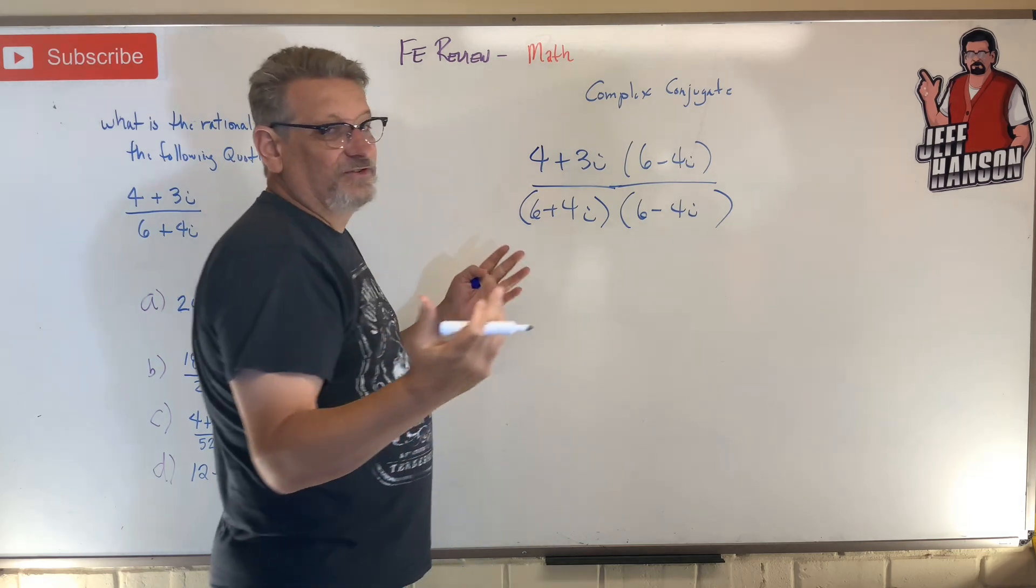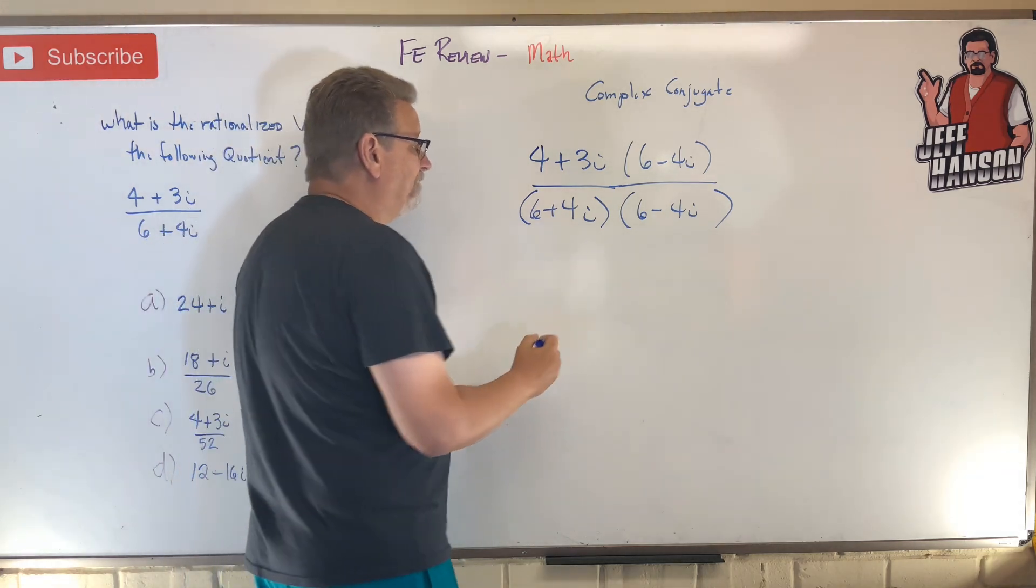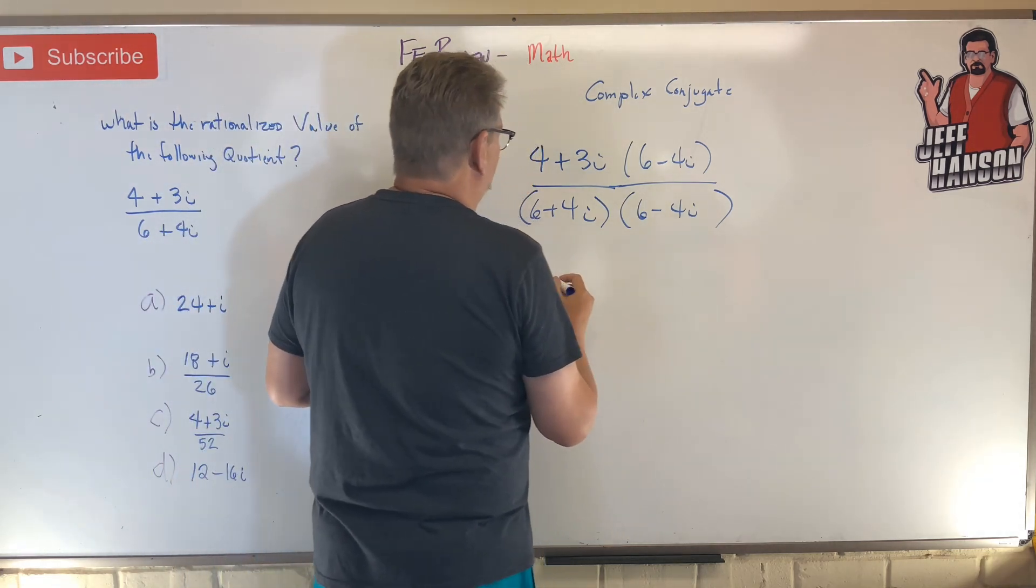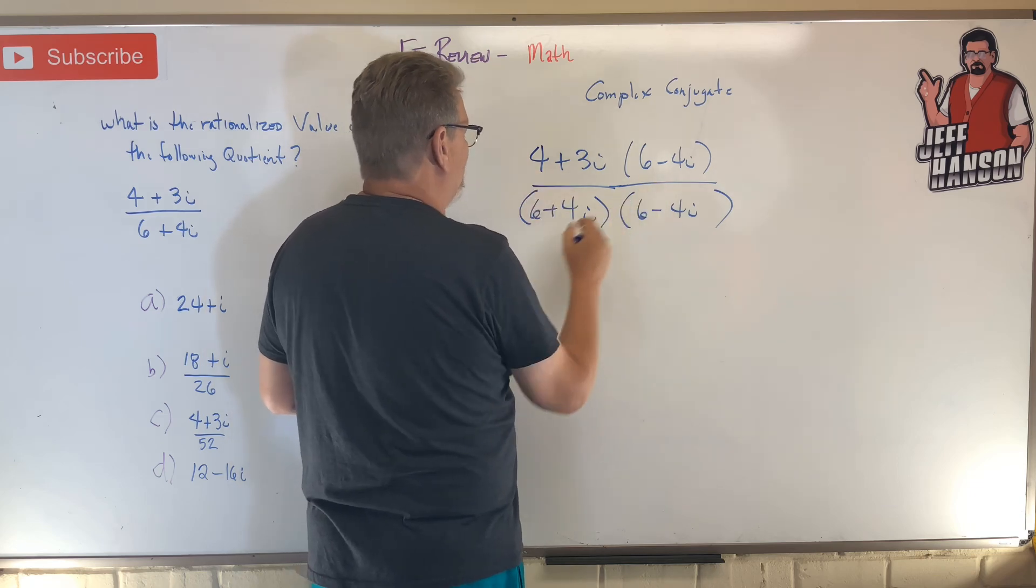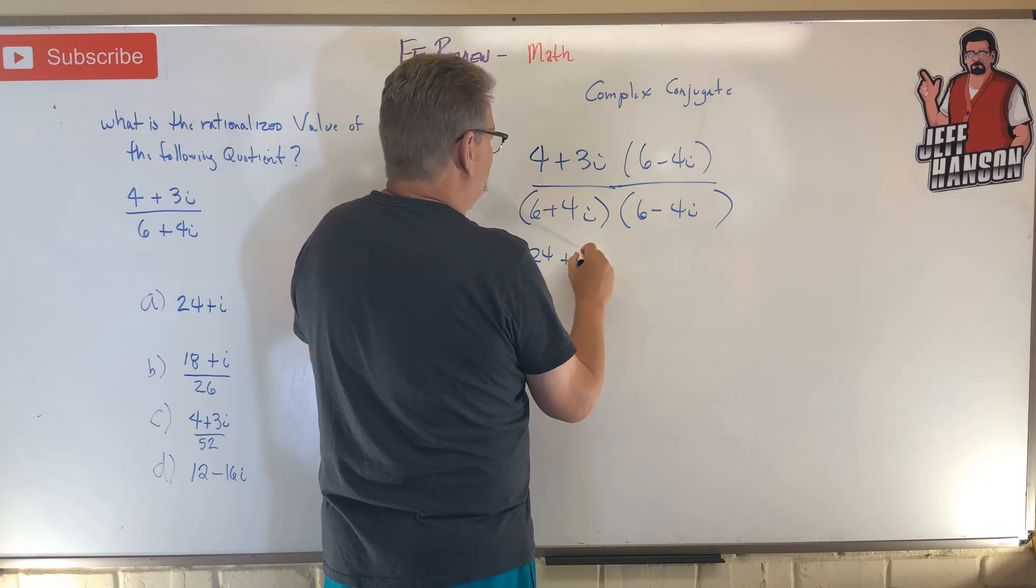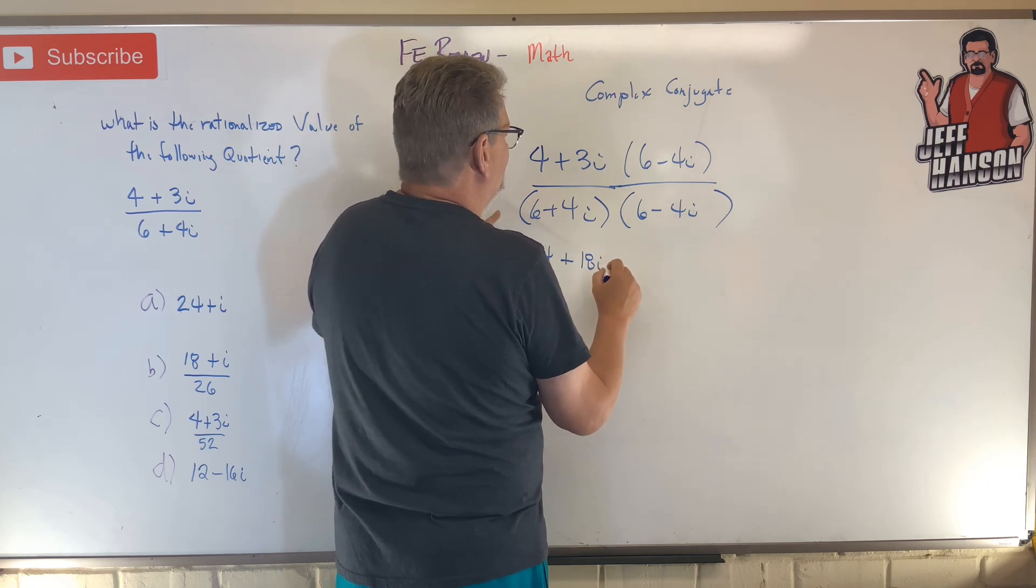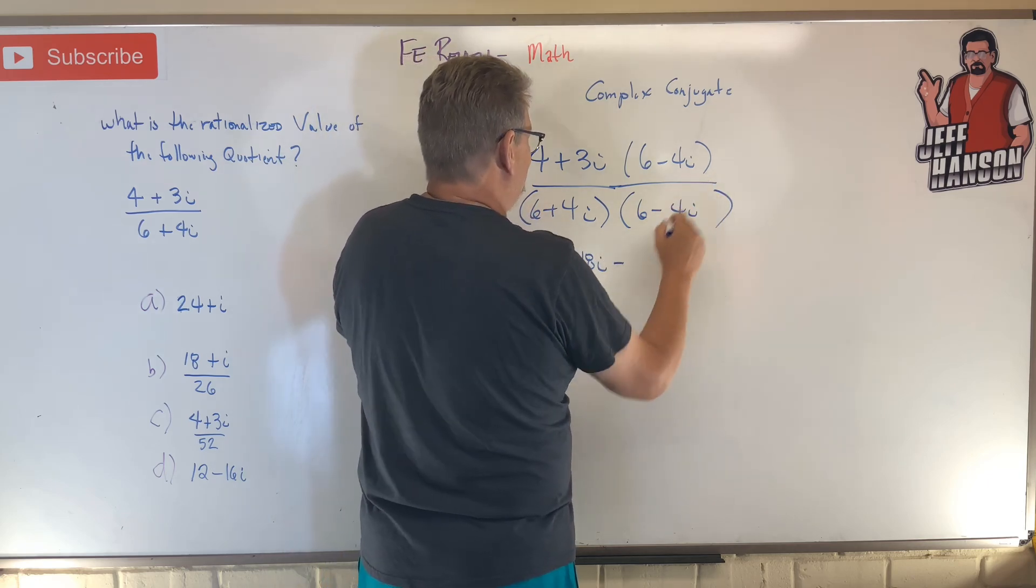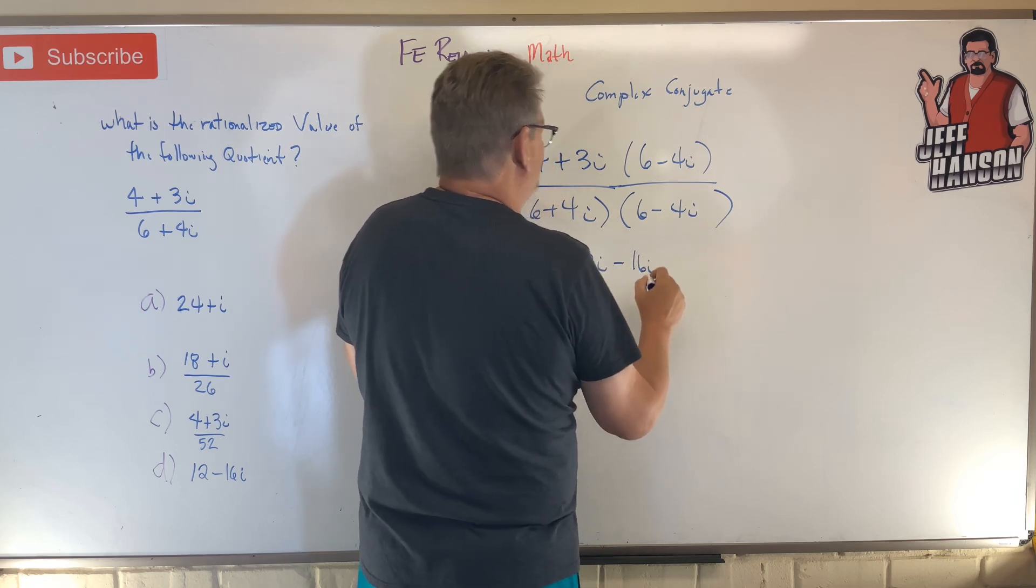Now if I do that on the bottom and the top, it's just like multiplying the whole thing by one. So on the top, what do I get? I'm going to FOIL this out, right? 24, plus 18i outside, minus 16i, and then the last minus 12i squared.